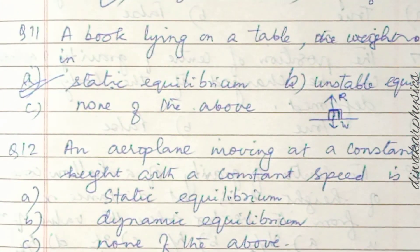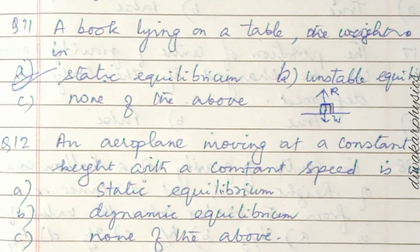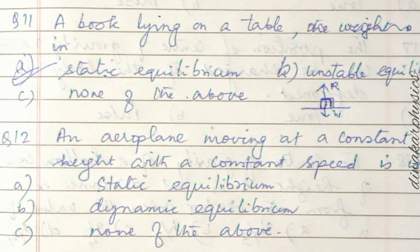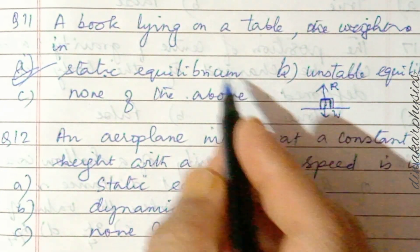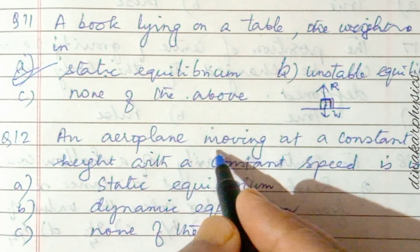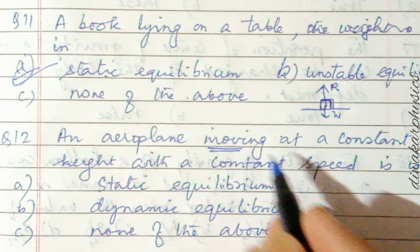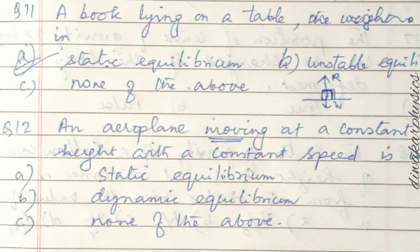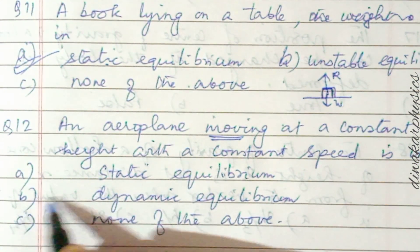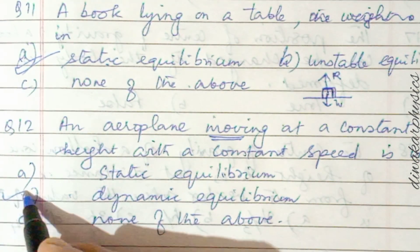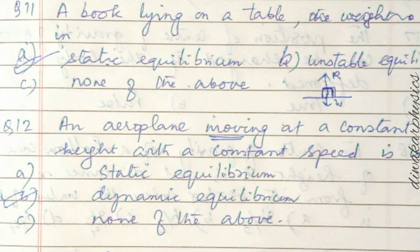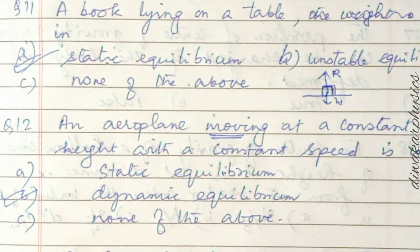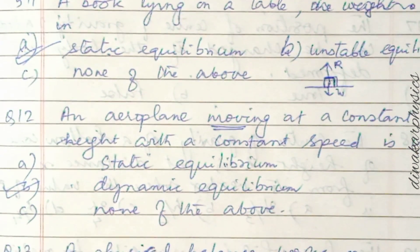Question twelve: an aeroplane moving at a constant height with a constant speed is in which equilibrium — static or dynamic? The aeroplane is moving with constant height and speed, so it is in dynamic equilibrium. When net force is zero but the body is still in motion, that is called dynamic equilibrium. Answer B is correct.